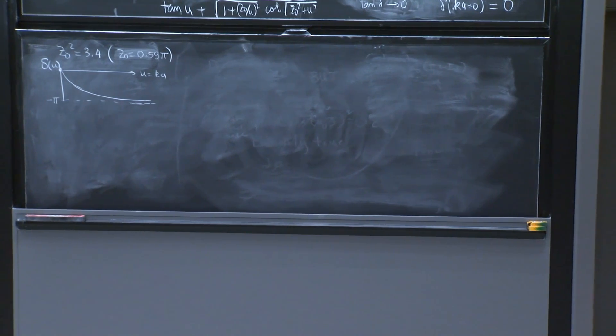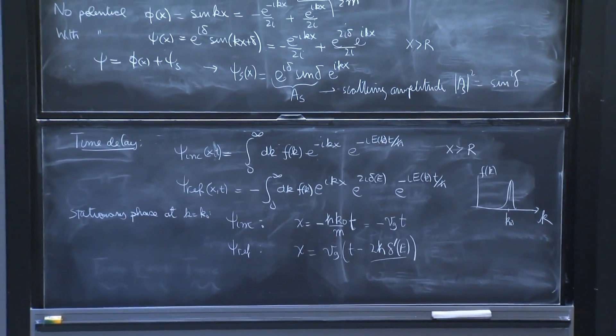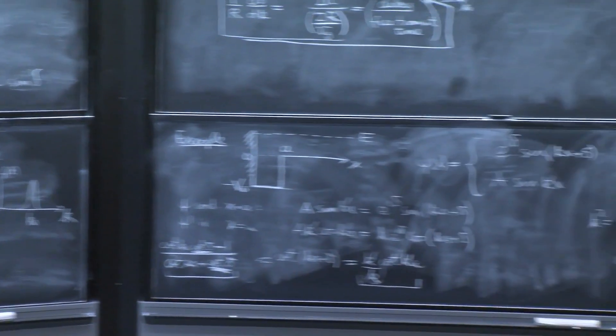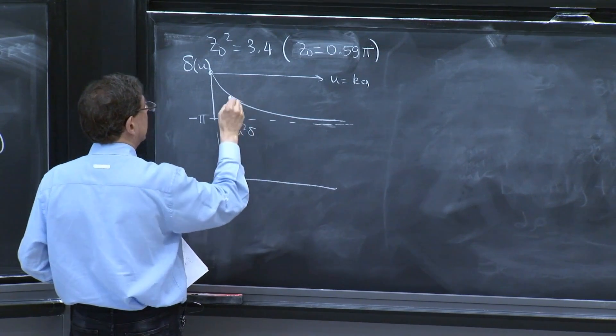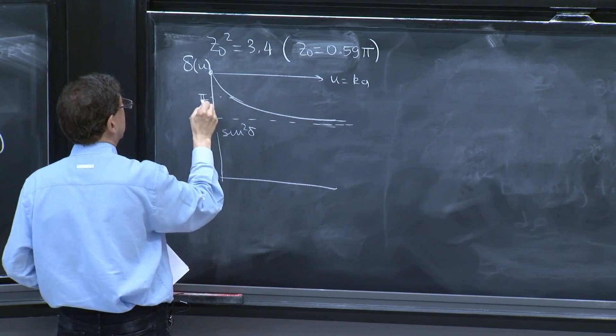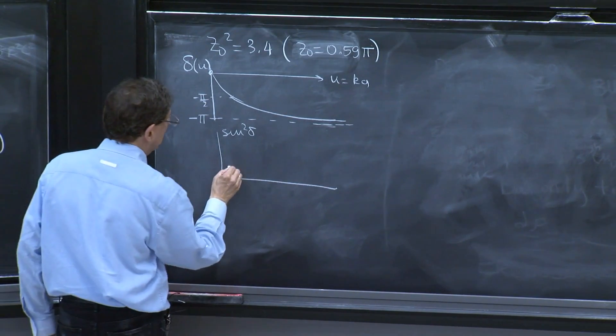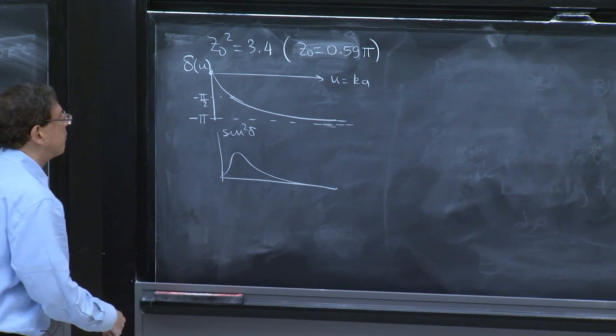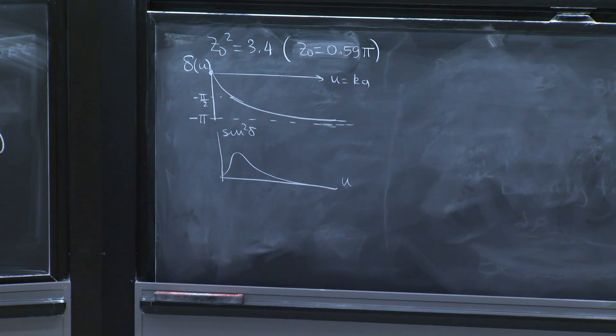The so-called scattering amplitude—when is the scattering strongest? When do you get an extra wave that is propagating more strongly? So you must plot sin squared delta. And sin squared is highest for minus π over 2. So this goes like this up and decays as a function of u.